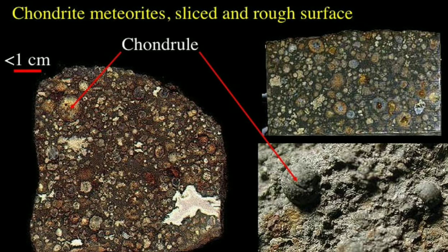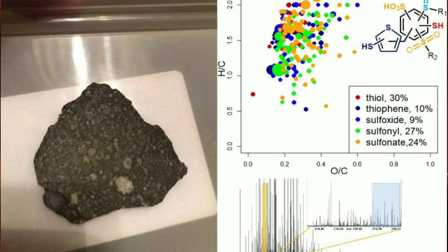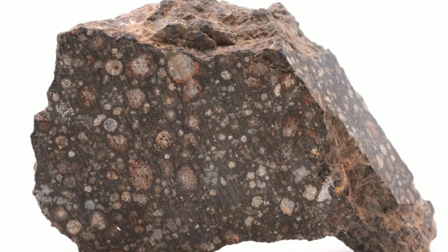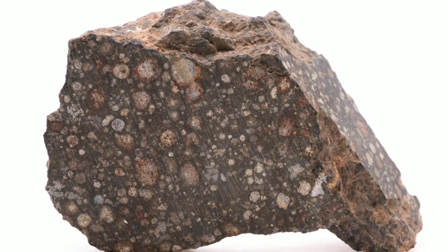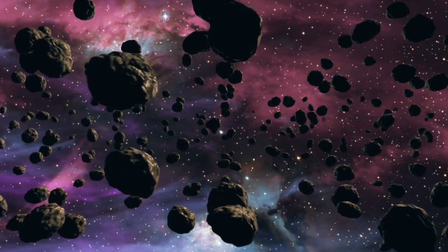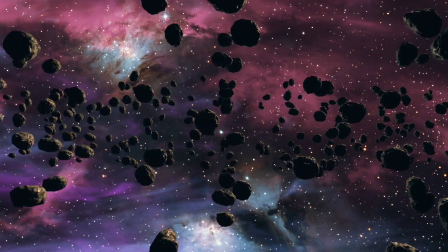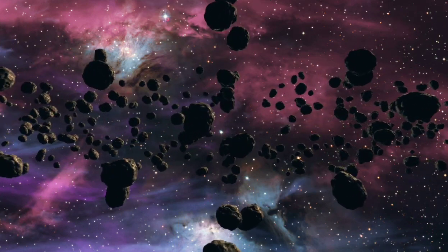Chondrites are the material from which the solar system formed. They have been little changed compared with rocks from larger planets, which have been subjected to geological activity. The most basic types, known as carbonaceous chondrites, are rich in water, sulfur and organic material. They are thought to have brought volatile material to Earth when it was newly formed, helping to establish the atmosphere and other conditions required to sustain life. Here are some sample images of chondrite-type stony meteorites.